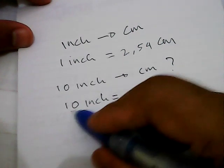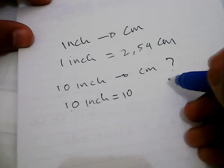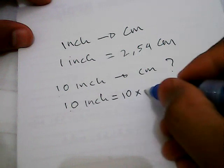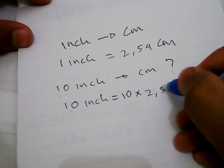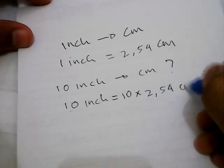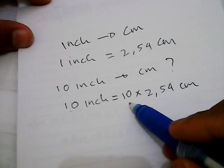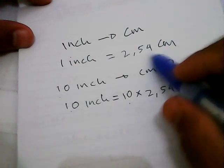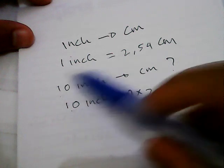Then you write down this 10 again here, and then we need to multiply this 10 with this number, 2.54 centimeters. Why do we have to multiply this 10 with this number? It's actually because we want to